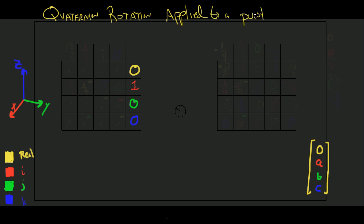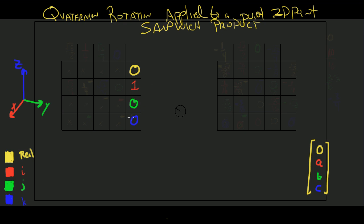A quaternion rotation applied to a point — that implies, of course, a 3D point — and it uses something called the sandwich product. I've got to put the sandwich product right up there with the squeeze theorem in terms of cool names.